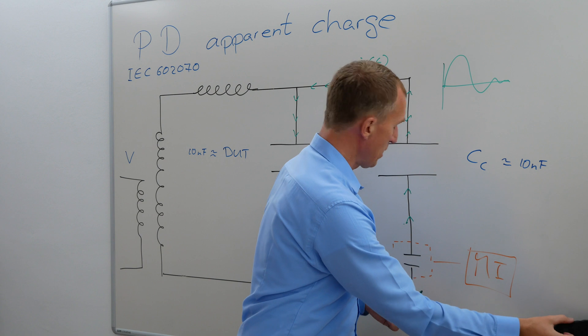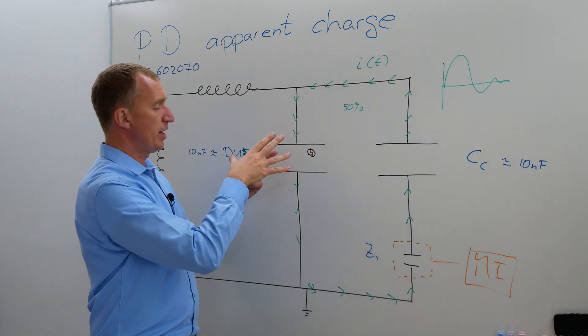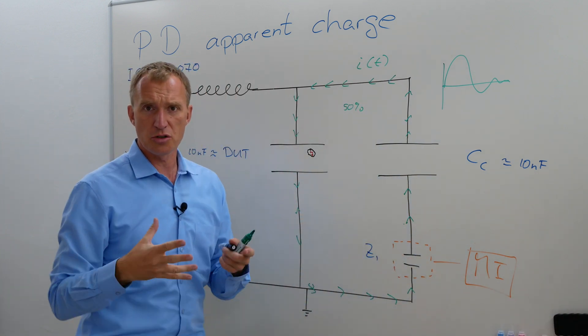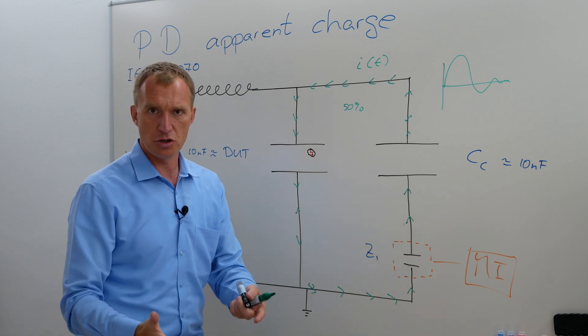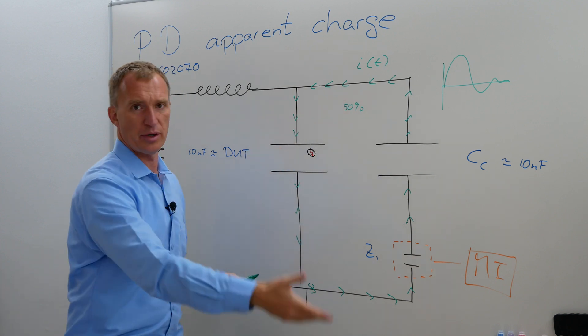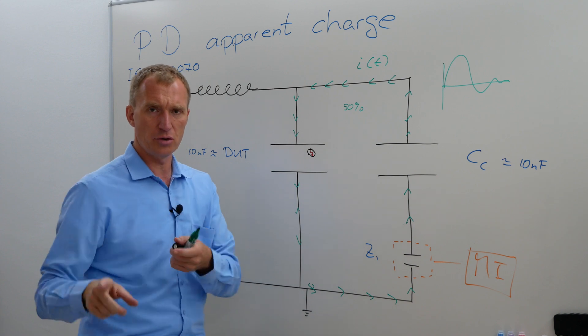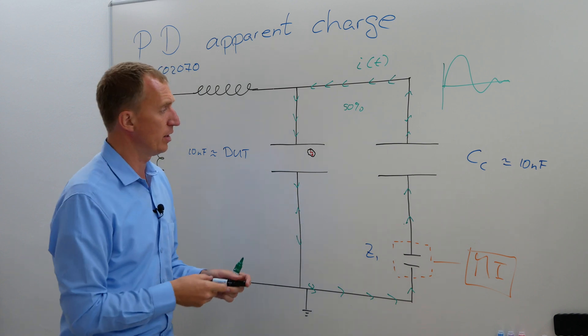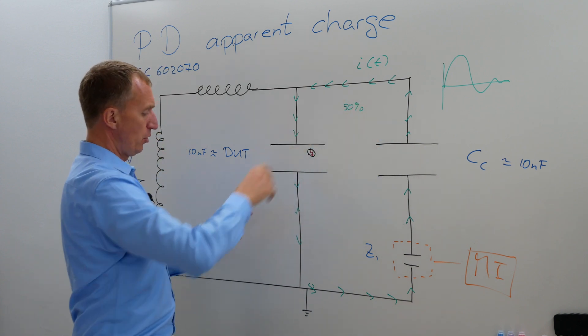So what does it mean? It means we can never measure the real charge, we can only measure an apparent charge because of our test setup. And not only, in part two we are going to talk about the other issues as well. However, this is not the only problem.